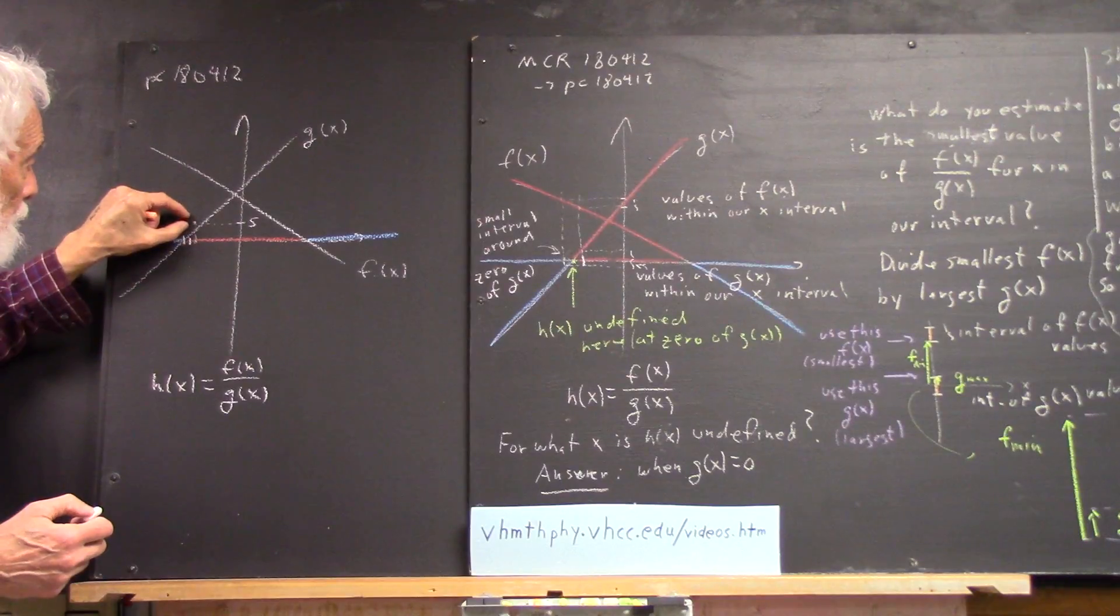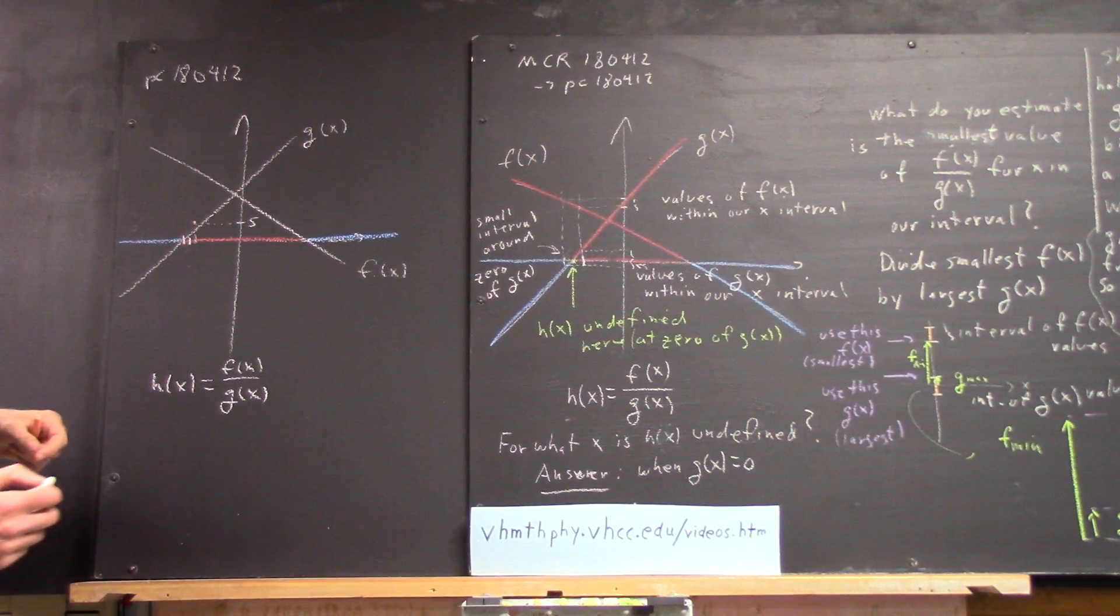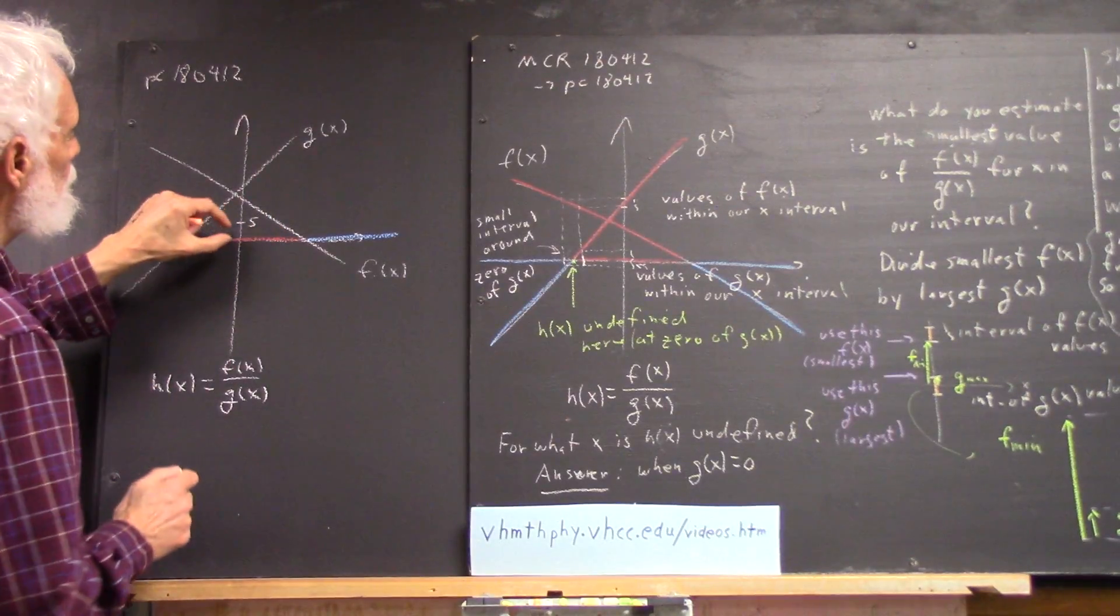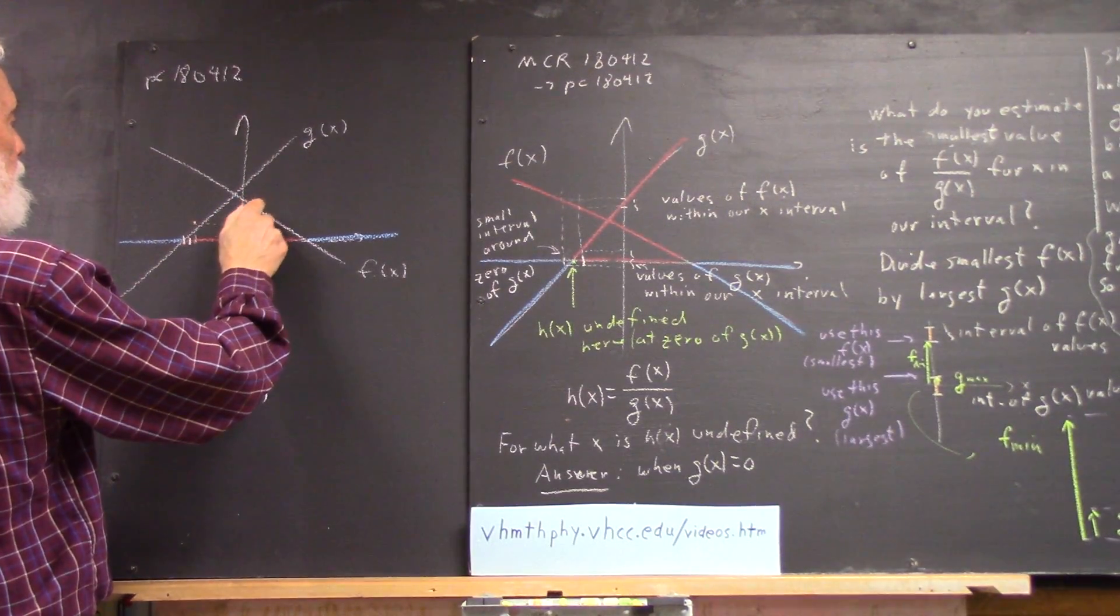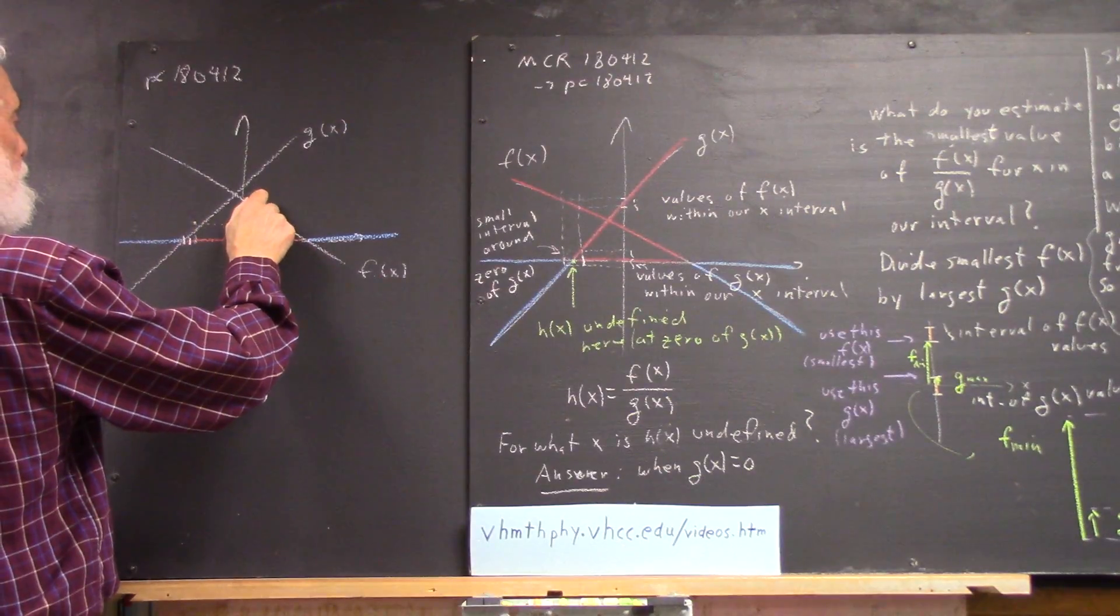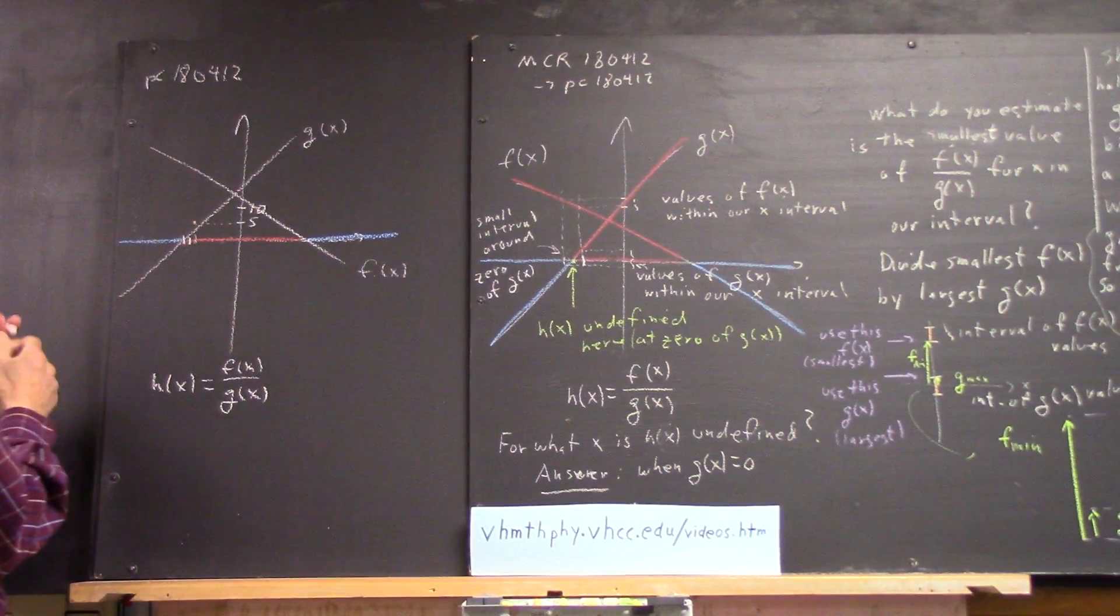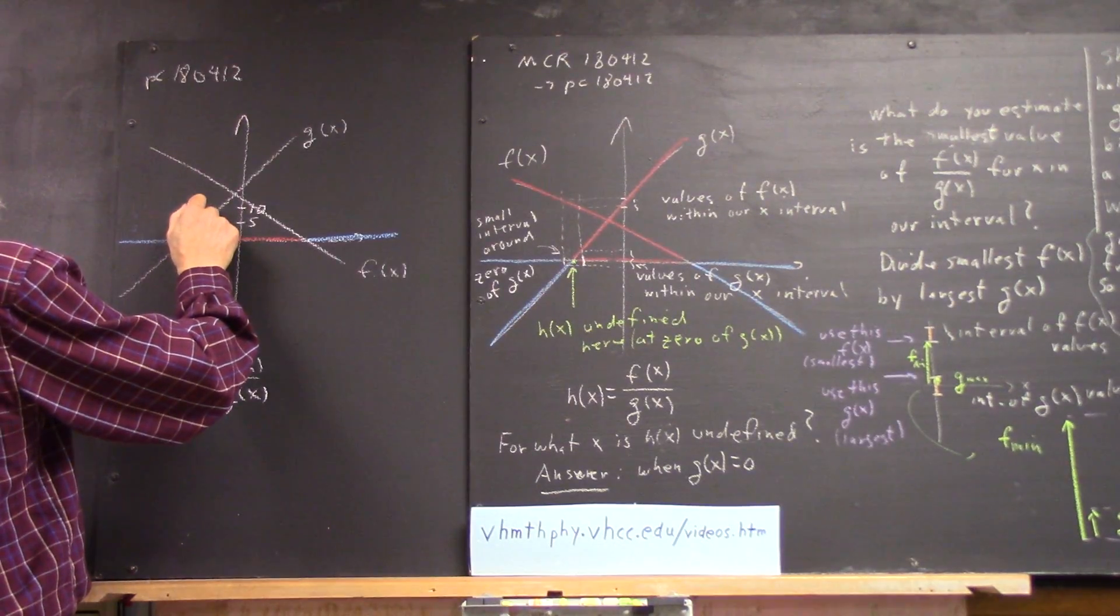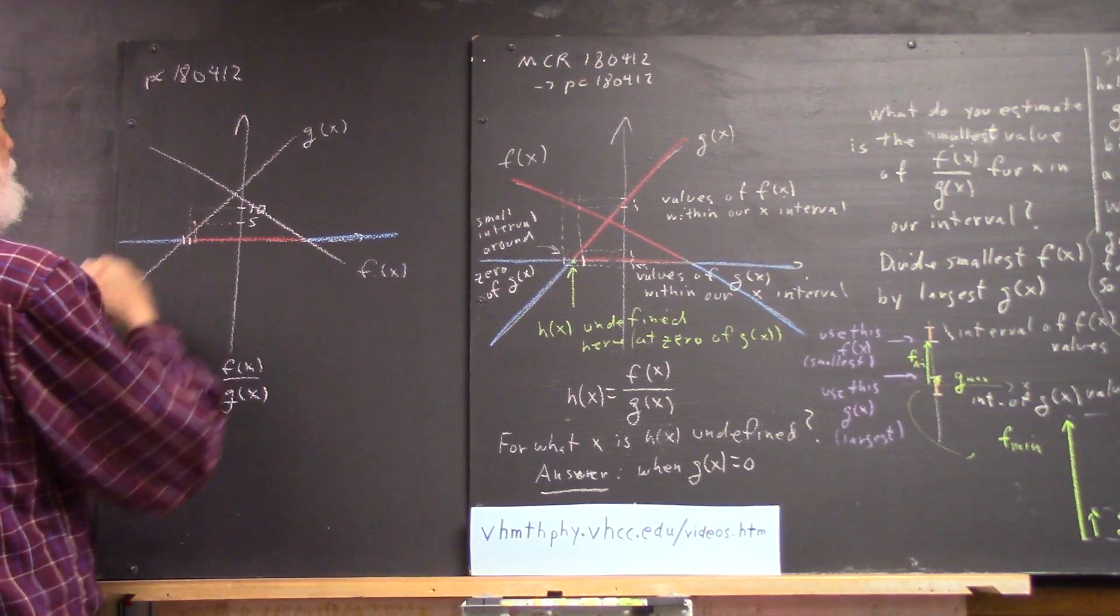Take one, two, three, four, ten of them. Okay? So we get a value ten, which is twice as far from the origin as the value five. So there's ten, and our value of h of x will have to be ten.